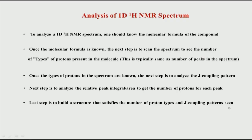We will continue with the analysis of the 1D spectrum. In the last class we saw the different steps required for analyzing and interpreting an NMR spectrum. We should first know the molecular formula, then know the types of protons, the J coupling pattern, and the relative intensity or peak area. When we take all of these together, we can get the total structure of the molecule.